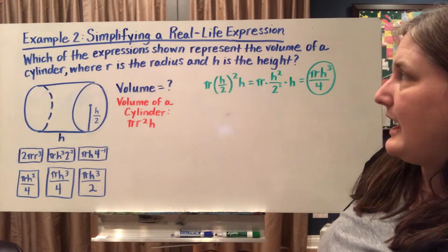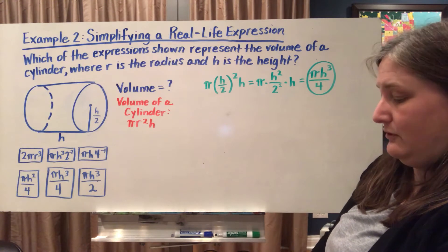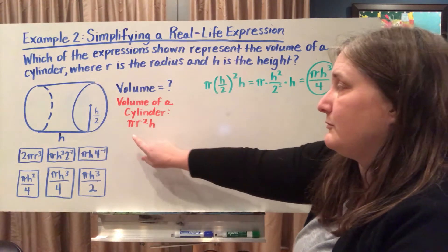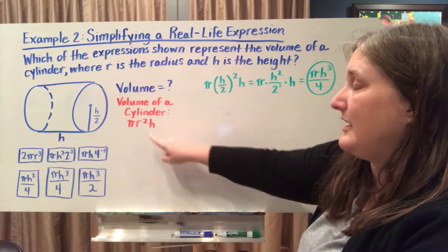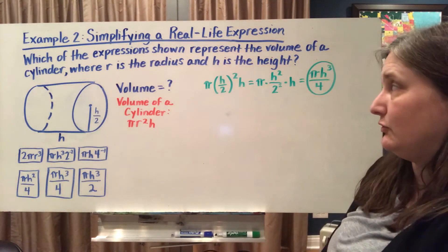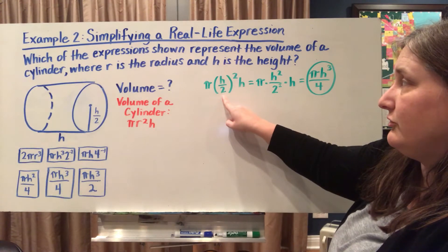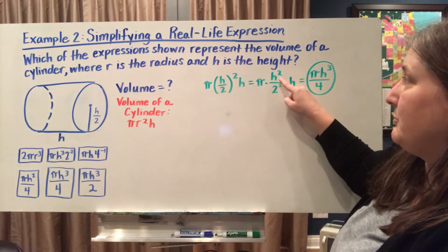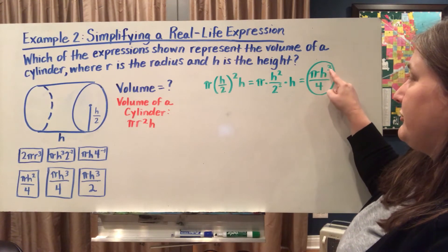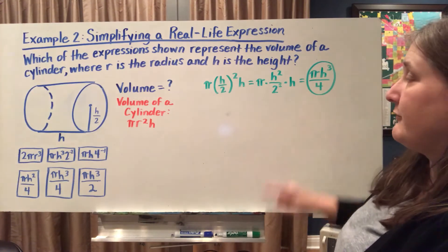In this problem, I'm looking at a cylinder and they want me to find different representations for the volume of the cylinder. The volume formula for any cylinder is pi times r squared times h, where r is the radius and h is the height. In this particular cylinder, the radius is half the value of the height, or h divided by 2. So instead of r, I substitute h divided by 2. Since the radius is being squared, I square both numerator and denominator, giving pi times h squared times h over 2 squared, which becomes pi h³ over 4. This is the simplified volume for this cylinder.